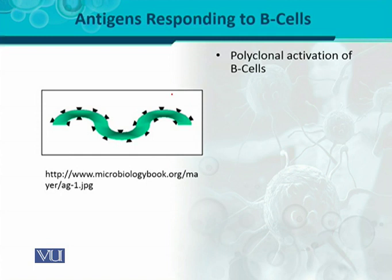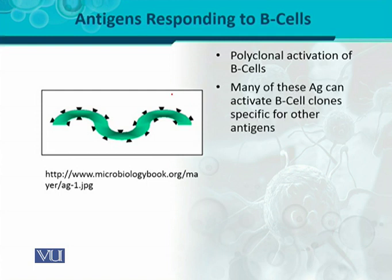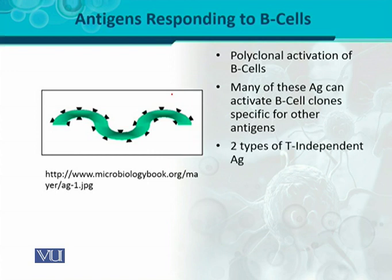When many clones of different specificities are activated, the response will be more appropriate. Many of these antigens can activate B cell clones specific for other antigens as well — such clones can also be activated which are specific for other antigens. There are two different kinds of T-independent antigens: Type 1, which is a polyclonal activator.